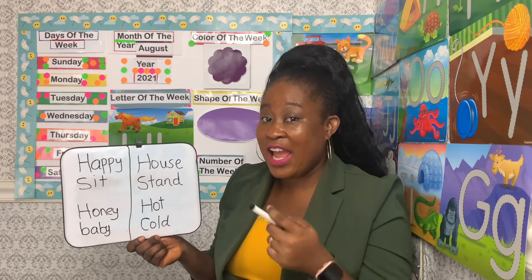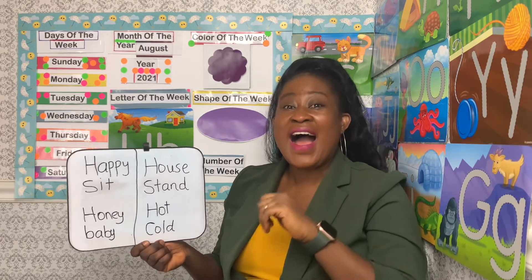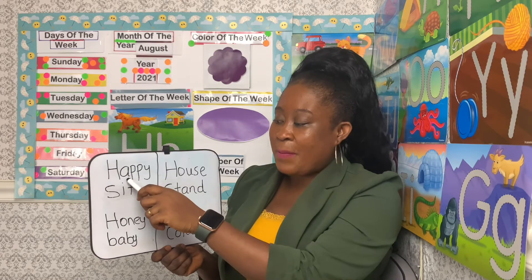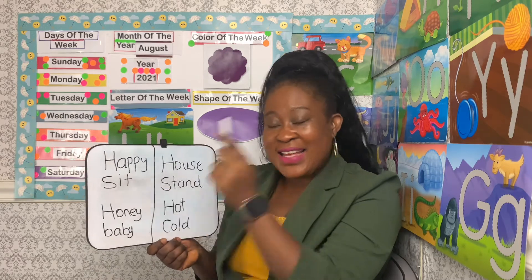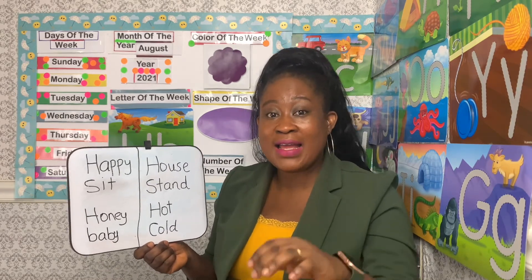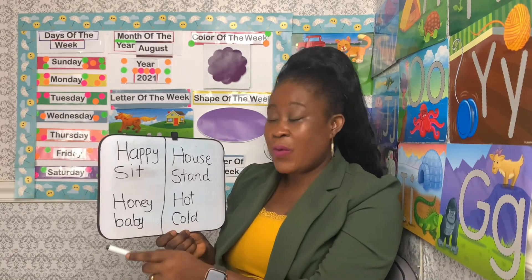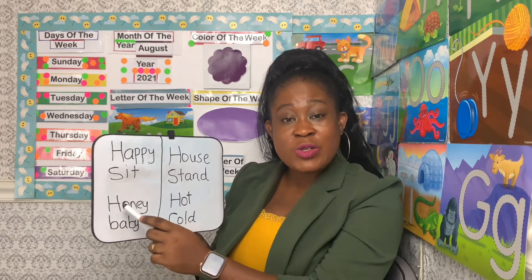Now let's play the I Spy letter game by finding the letter H. I spy with my little eye a word that begins with H — and we have happy and six. Which one begins with H? Yes! If you said happy, you are right! Let's keep playing. I spy with my little eye a word that begins with H — and we have honey and baby. Which of these words begins with H? Yes, honey!